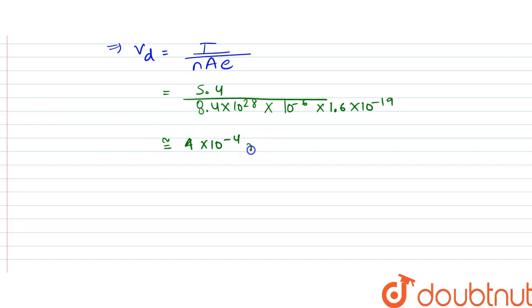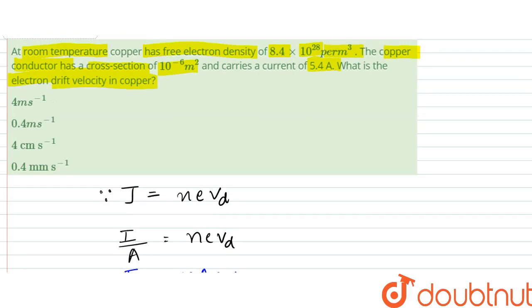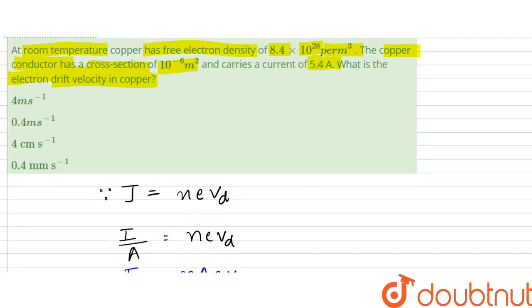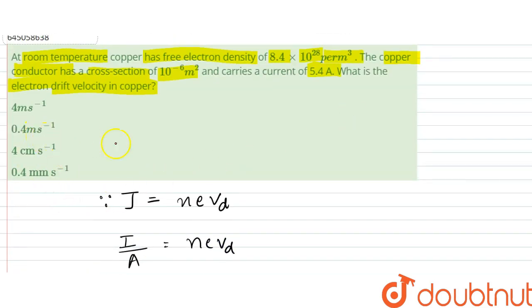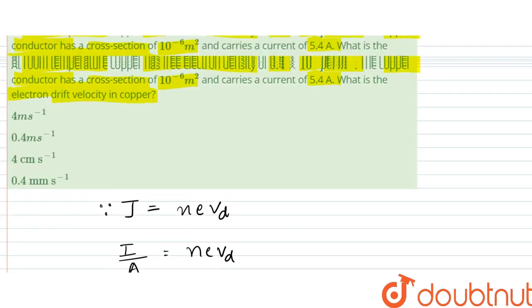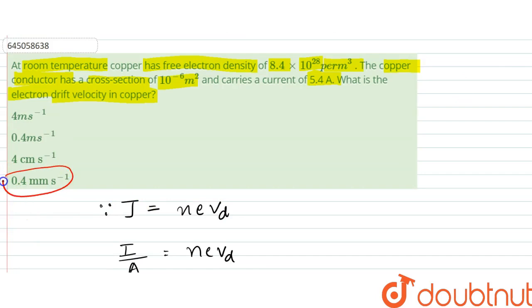So that is our drift velocity, that is 4 into 10 to power minus 4 meter per second. So what we can write this to be equal to 4 into 10 to power minus 2 centimeter per second. So that would be equal to 0.04 centimeter per second, or we can write this to be 0.4 millimeter per second. So that is option D. That is our answer. Thank you.